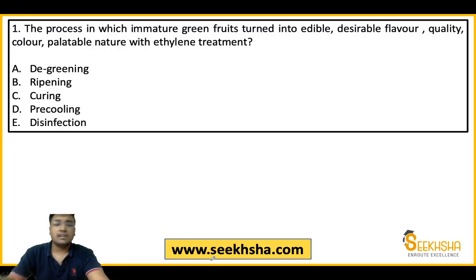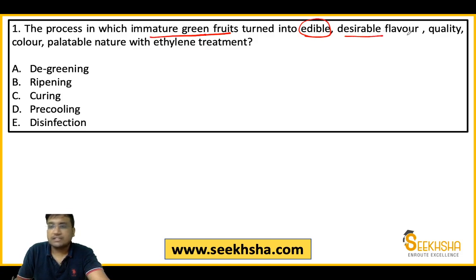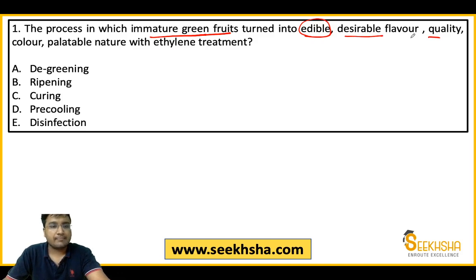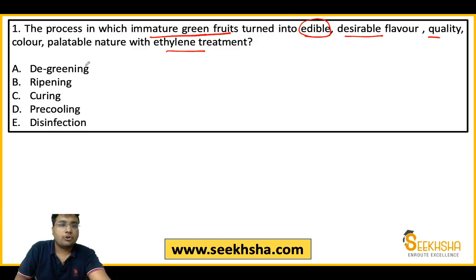Let's come to the first question. The process in which immature green fruits — fruits that have not properly ripened — are converted into edible form with proper flavor, quality, and color, making them ready-to-eat, using ethylene treatment. What is this process called? Option A: de-greening, Option B: ripening, Option C: curing, Option D: pre-cooling, Option E: disinfection.